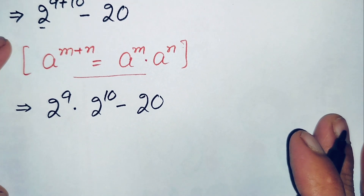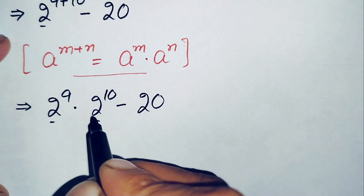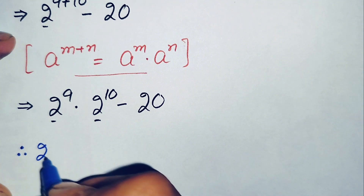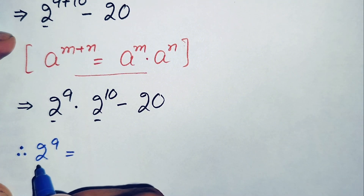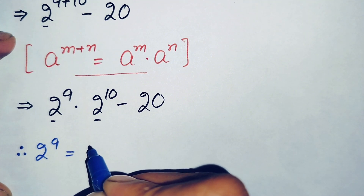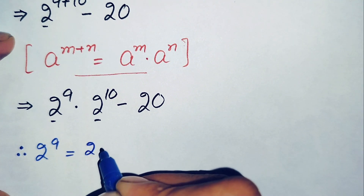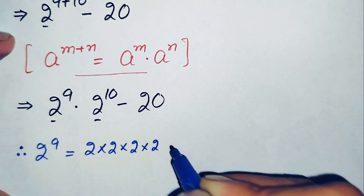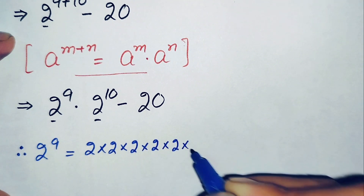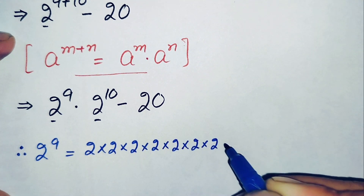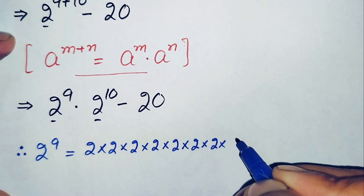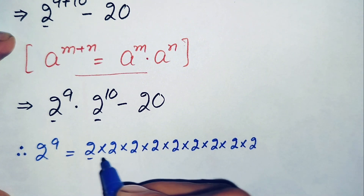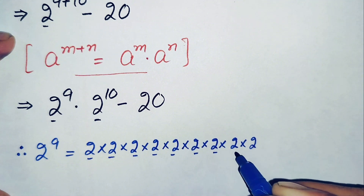What we will do here is find the value of 2 raised to power 9 and 2 raised to power 10. The value of 2 raised to power 9 means we need to multiply the base 2 nine times. So: 2 times 2 is 4, times 2 is 8, times 2 is 16, times 2 is 32, times 2 is 64, times 2 is 128, times 2 is 256, times 2 is 512.